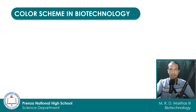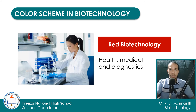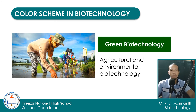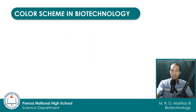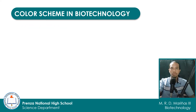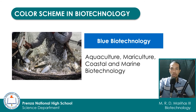Red biotechnology consists of activities, processes, and products aimed to improve health, medical, and diagnostics. Green biotechnology focuses on agricultural and environmental biotechnology, encompassing how we improve our crops and livestock, as well as how we use biotechnology to perform remediation practices in our environment. In white biotechnology, applications, products, and processes involved in industrial processes and bioprocess technology are developed and improved. Aquaculture, mariculture, and coastal and marine biotechnology are the main focuses of blue biotechnology.